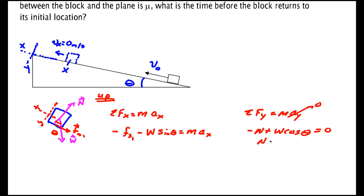So I have that the normal force equals mg cos θ. Well, remember the friction force is minus μ times the normal minus mg sin θ equals maₓ.